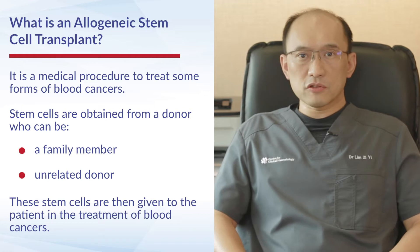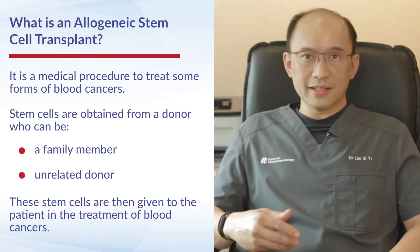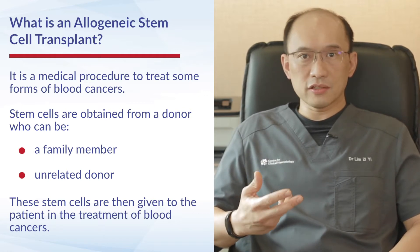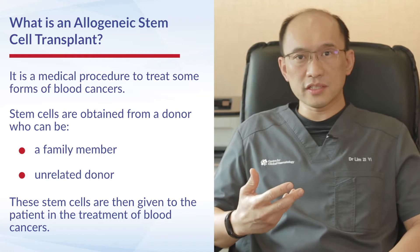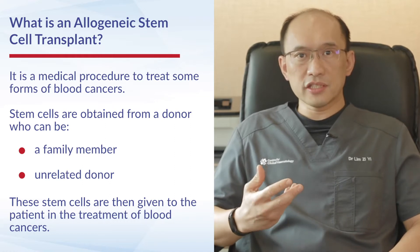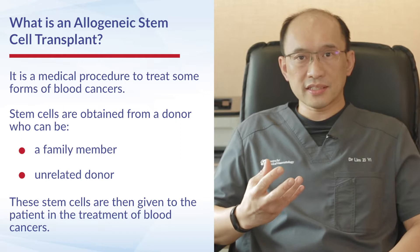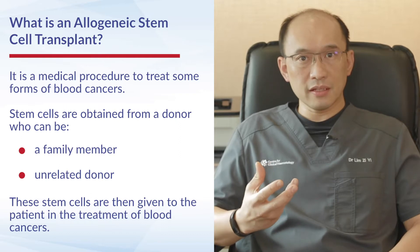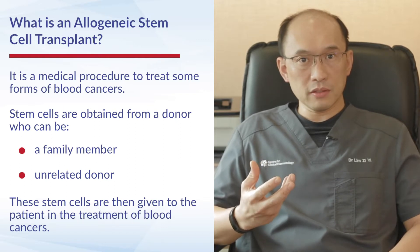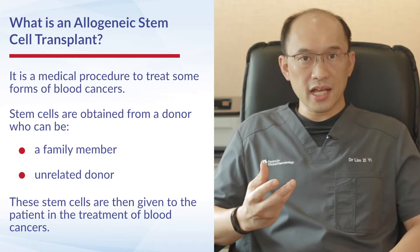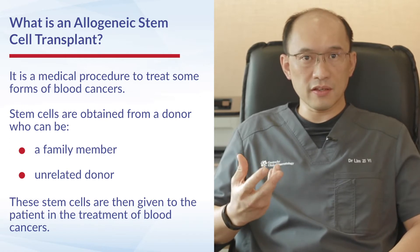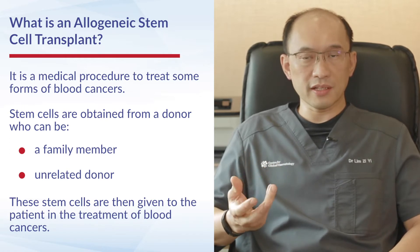An allogeneic stem cell transplant, or allotransplant, is a medical procedure used to treat some forms of blood cancer. In an allogeneic transplant, stem cells are obtained from a donor — which could be a family member or unrelated donor — and are given to patients to help rescue them in the treatment of blood cancers.